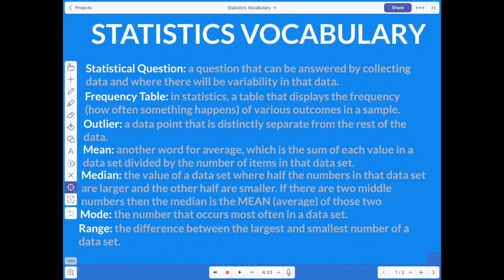So a statistical question is a question that can be answered by collecting data and where there will be variability in that data. If you ask a classmate how old are you, and that student gives you one answer back, there's no variability. But if you ask everybody in the classroom how old they are, you're going to get different answers because not everybody's the same age. So that answer is going to have variability. It's a question that you ask and you're going to get a variety of answers.